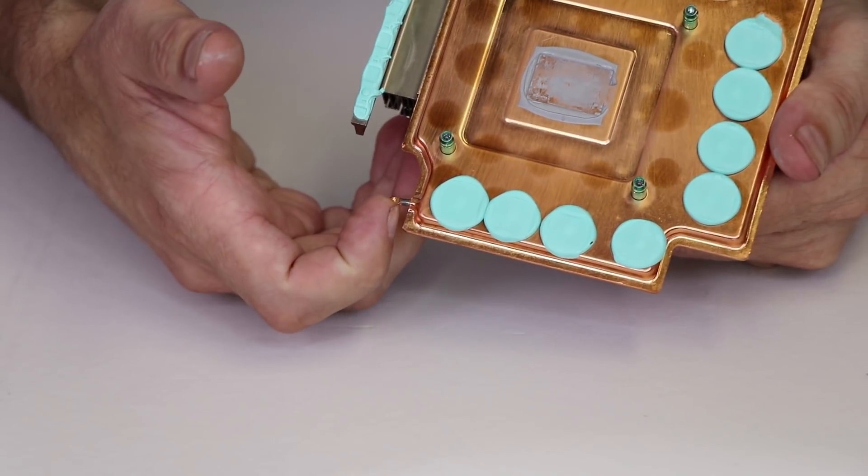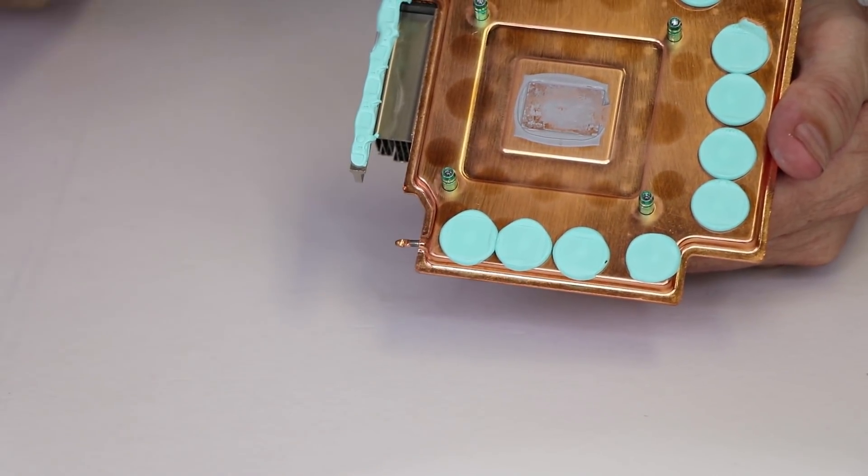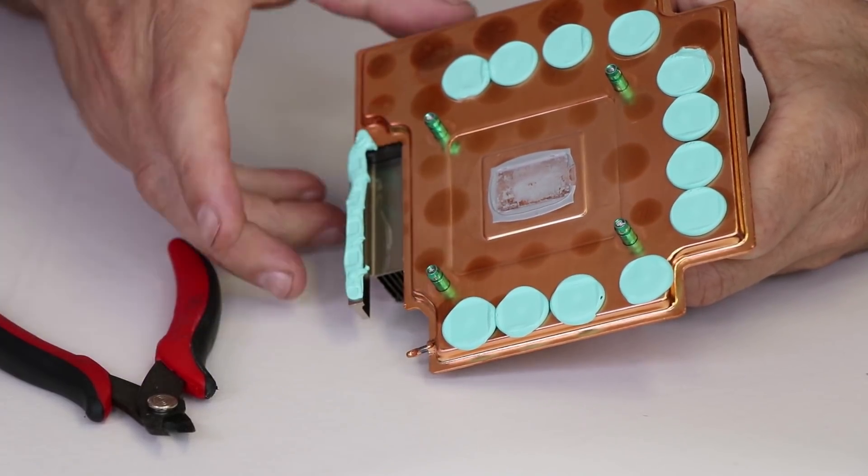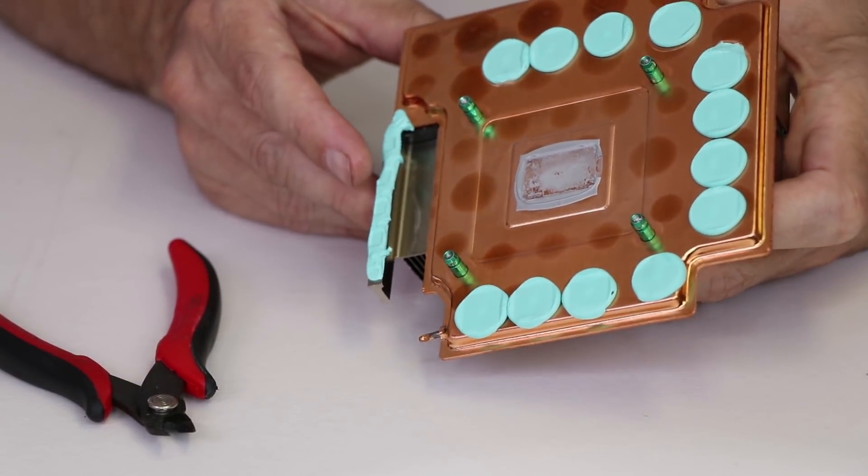So what I'm going to do is I'm going to snip the end off of this heat pipe right here and I'm going to pour it out and see what is in here. So comment below if you actually think there's coolant in here, and if so, what is the coolant?